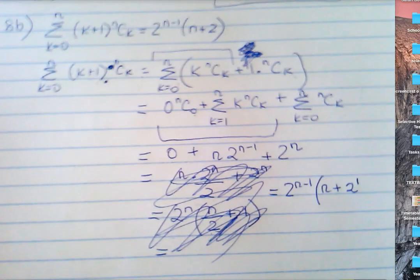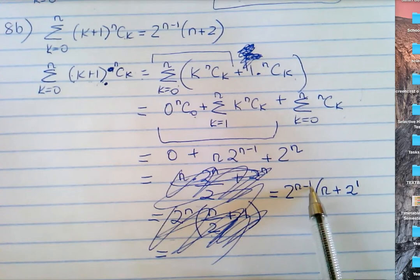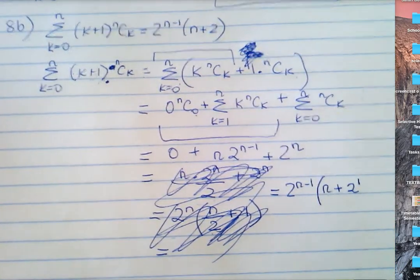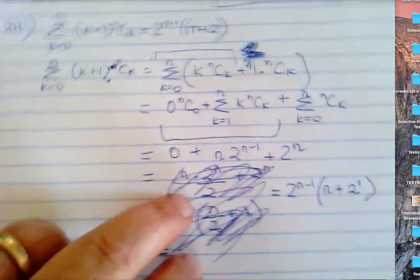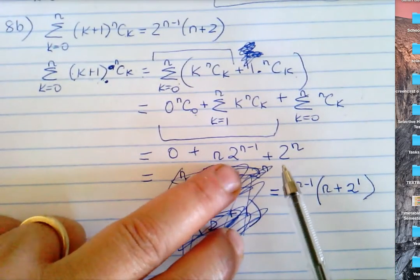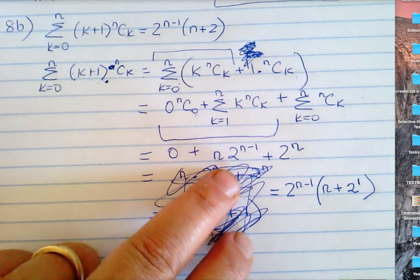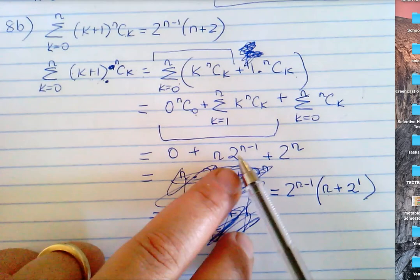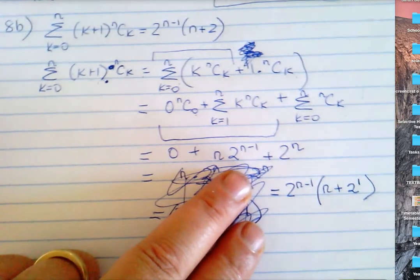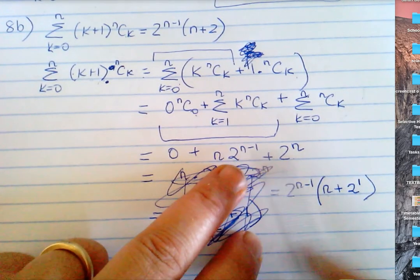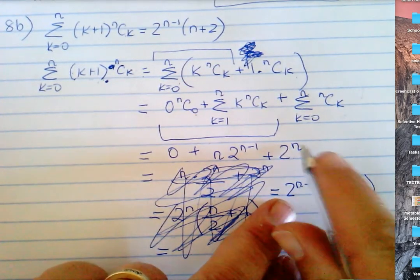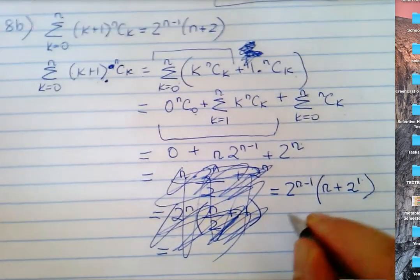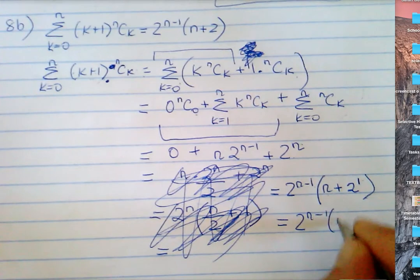2 to the n minus one times n. How do I go from 2 to the n minus one to 2 to the n? When you've got a common factor, you pull out the lowest common power. n minus one is smaller than n, so that's why they're pulling out n minus one. n minus one is one smaller than n, so you get 2 to the power of n minus one times n plus 2 to the power of one. 2 to the n minus one plus one is just n plus two, which is the answer — 2 to the n minus one times n plus 2.